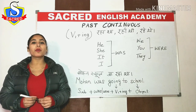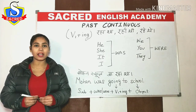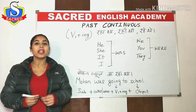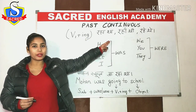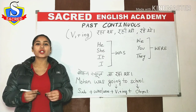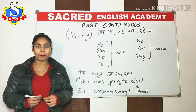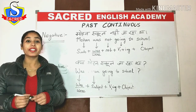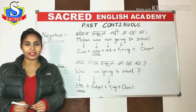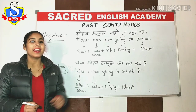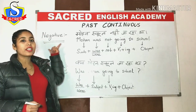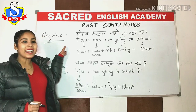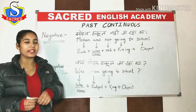So in the same manner, whenever you have a sentence ending with 'raha tha', you apply past continuous tense. Now let's go to the negative part. Negative sentences are those which express 'doesn't' or 'did not' — sentences that deny something.